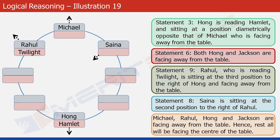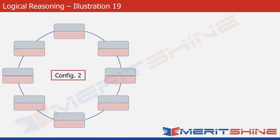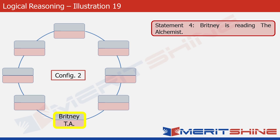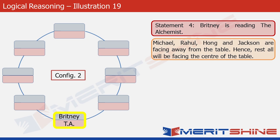We'll stop here and call this structure configuration one. We'll now move to configuration two and fill it in parallel, because we cannot find any appropriate statement to proceed with configuration one any further. We'll merge the two configurations afterward. Looking at statement four: Brittany is reading The Alchemist. Since this is a fresh configuration, we can place this anywhere. Since Brittany is not among the four facing away from the table, she is facing the center, so let's put an inward arrow at her position.